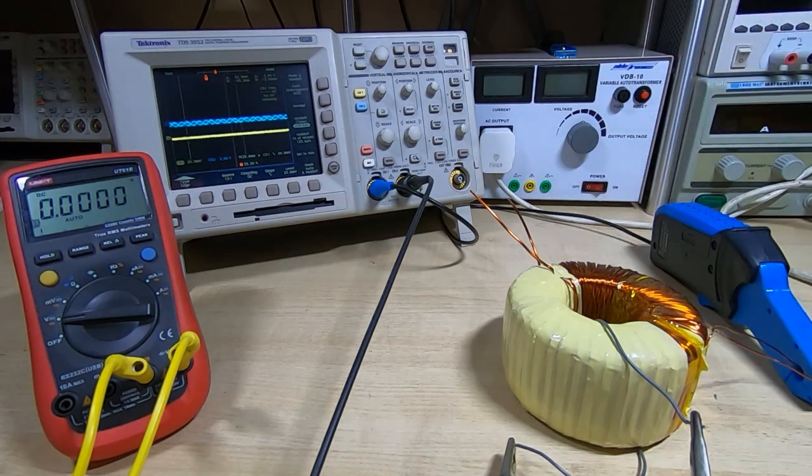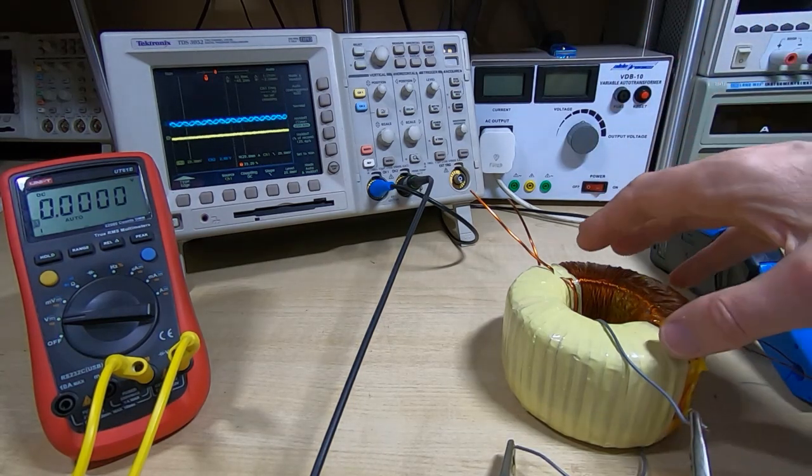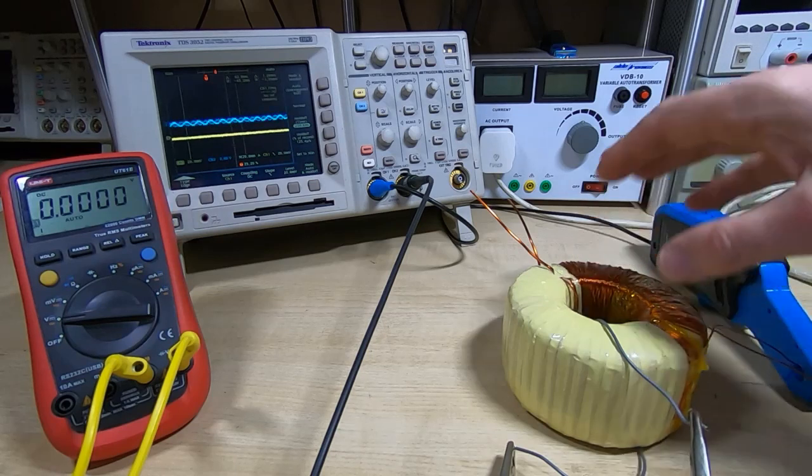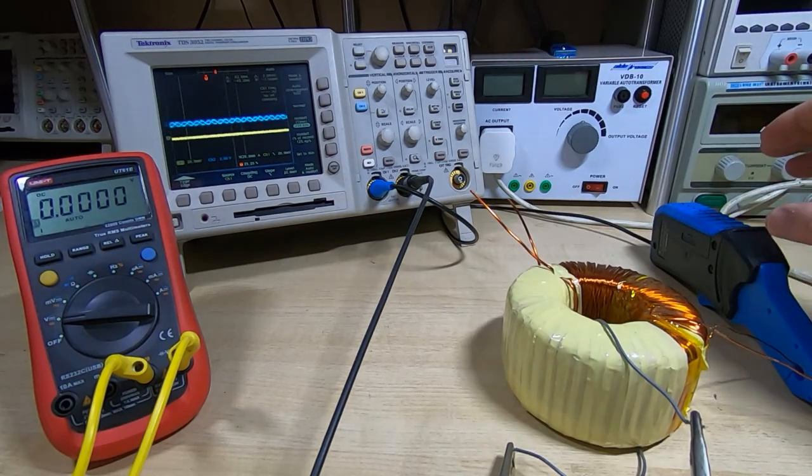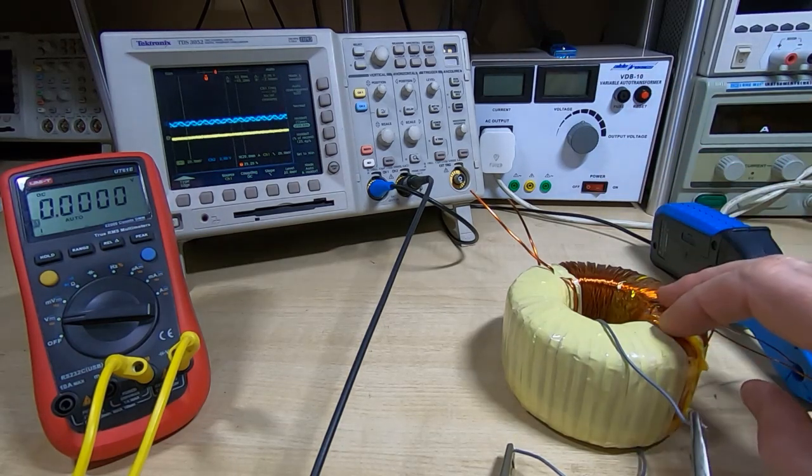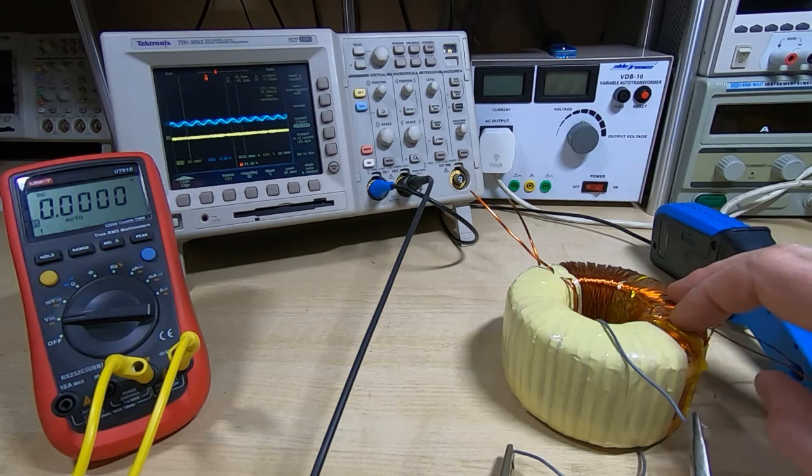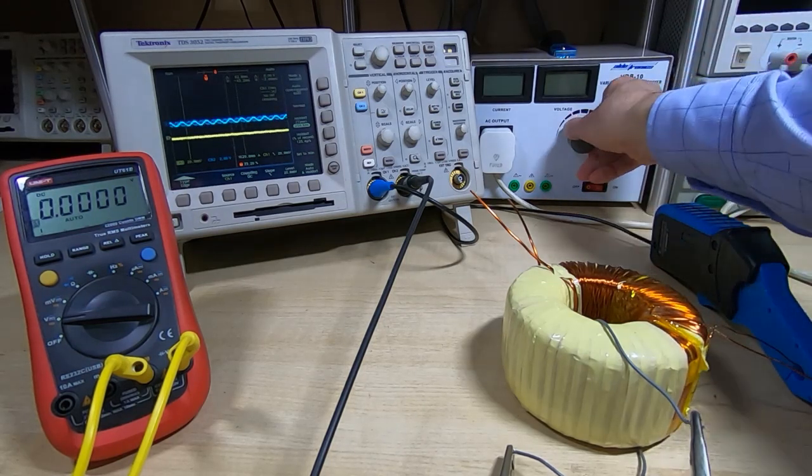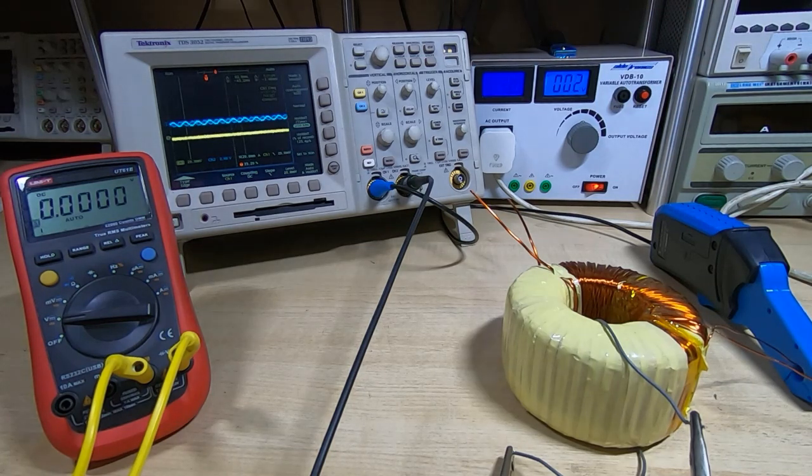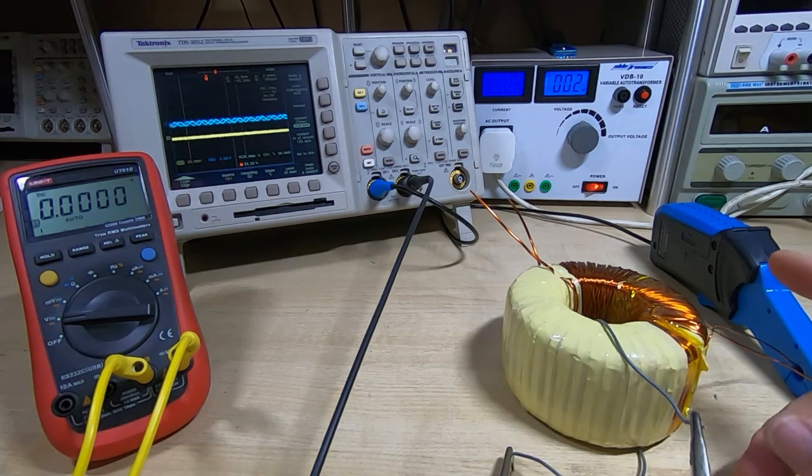I have this going to the multimeter. I've pulled out my VDB 10, this is an auto transformer so I can vary the voltage being fed into the primary. I'll come back to the scope and the clamp in a few minutes. First thing we'll do is calculate the number of turns. I've got this turned down, I'll turn the power on and start increasing the voltage on the transformer.